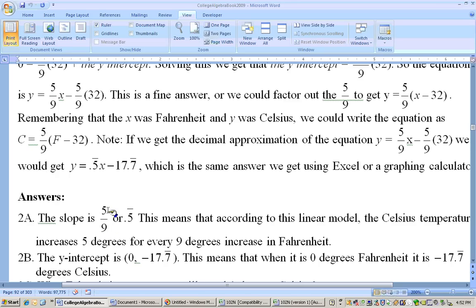and this means that for every five degrees that we go up in Celsius, because Celsius is playing the role of y, and y is on the top, so for every five degrees that a temperature goes up in Celsius, that's the same as going up nine degrees Fahrenheit,